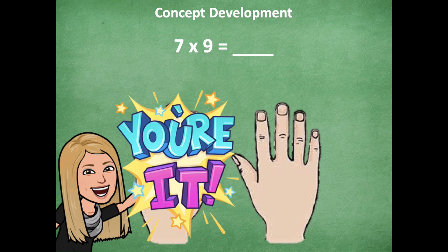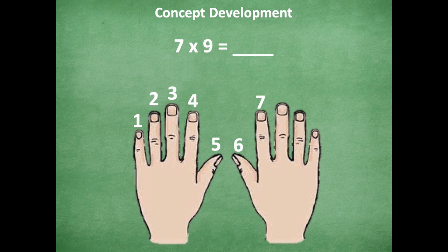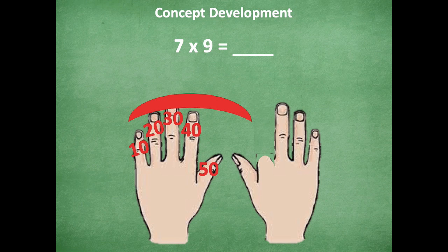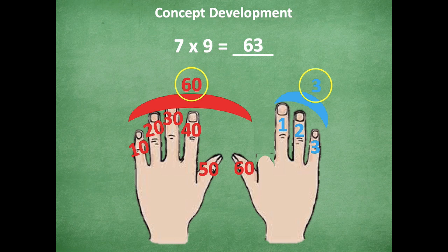All right friends, make sure to pause if you need more time. Otherwise, let's count. One, two, three, four, five, six. Don't forget those thumbs. Seven. So we're going to put down our seventh finger. Now the ones on the left are our tens. So 10, 20, 30, 40, 50, 60. That represents 60. The ones on the right are our ones. One, two, three. So we have 63. 7 times 9 equals 63. How cool is that one? That's such another awesome strategy. I think that's probably one of my favorites. Definitely pretty cool.